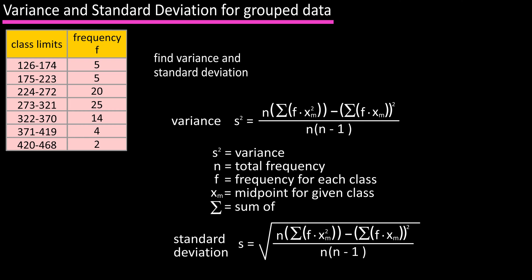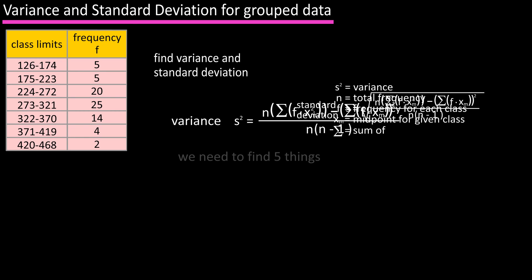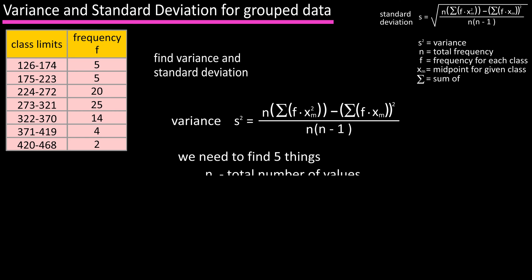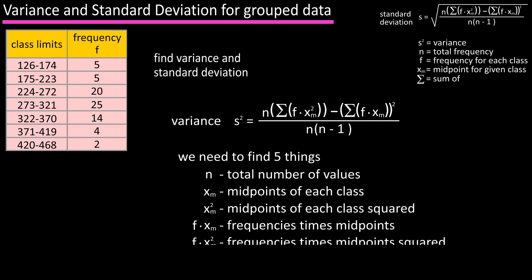The standard deviation is the square root of this formula. We need to find five things: n (the total number of values), xm (the midpoints of each class), xm² (the midpoint squared for each class), f × xm, and f × xm².